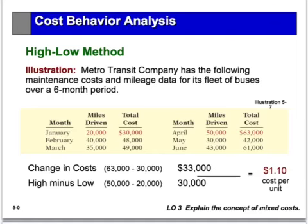For example, we have Metro Transit Company, which has tracked their maintenance costs and mileage. In January they did 20,000 miles at a cost of $30,000. In February, 40,000 miles cost them $48,000. In March, 35,000 miles cost $49,000 for maintenance — and so on for six months. You can see the cost is changing with activity, but when activity doubled from 20,000 to 40,000 miles, the cost did not double. So this cost is partly fixed and partly variable.